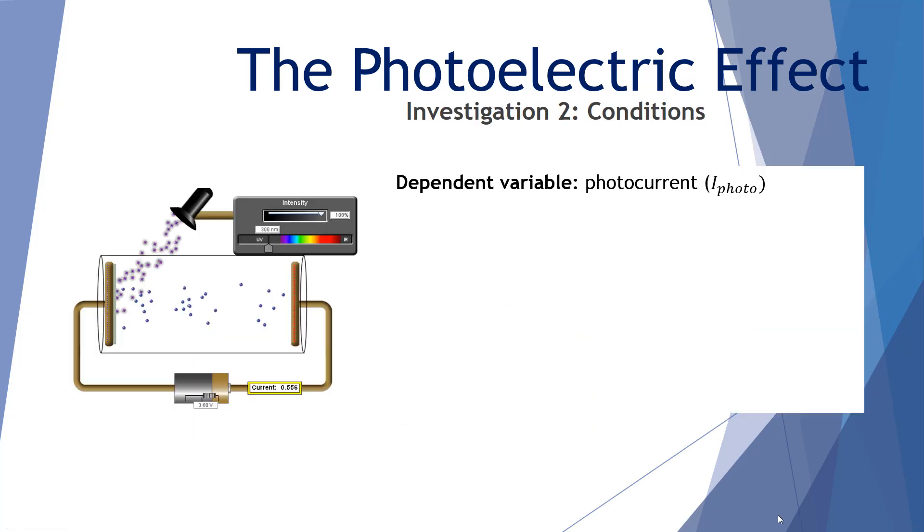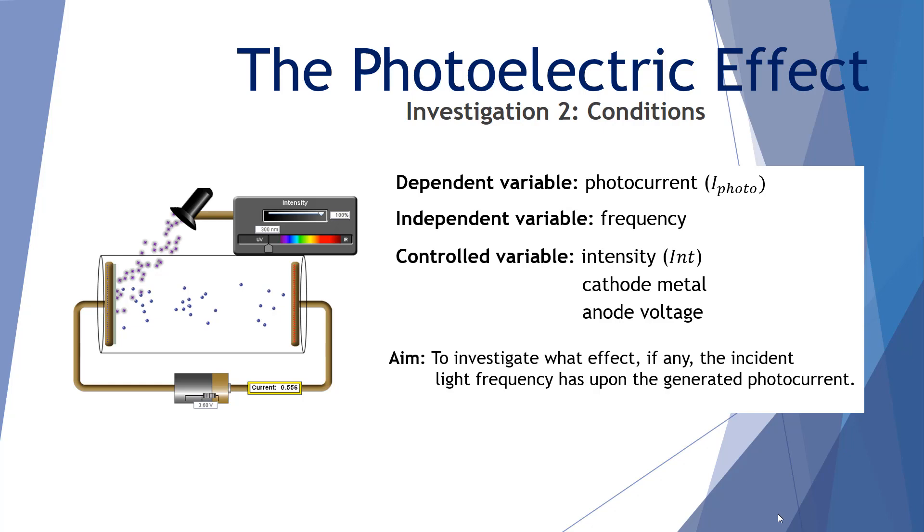So our dependent variable is the photocurrent, our independent variable is the frequency, our controlled variables are the intensity of the light, the cathode metal, and the anode voltage. The aim is to investigate what effect, if any, the incident light frequency has upon the generated photocurrent.